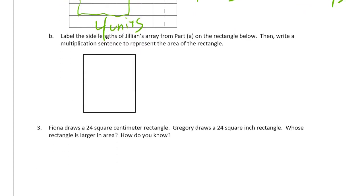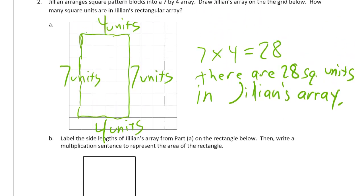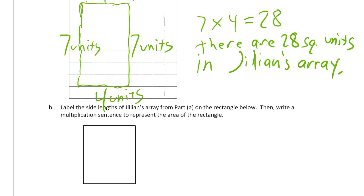Label the side lengths of Jillian's array from part A on the rectangle below. So this was a 7 by 4, right? So we'll call this 7 and 4. Like that. Then write a multiplication sentence to represent the area of the rectangle. So that's just the same thing again. So 7 times 4 equals 28.